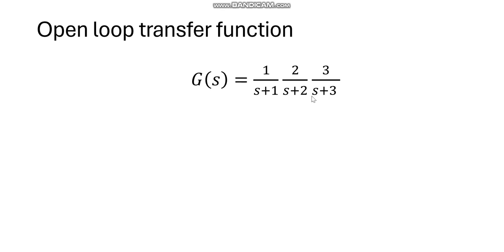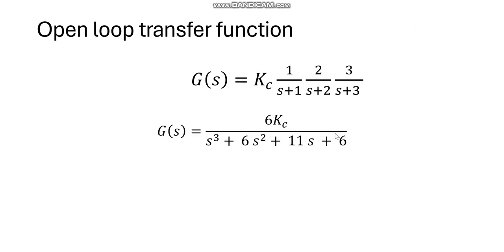I forgot to write Kc here, so I have just corrected it. This is the open-loop transfer function — a product of all the transfer functions. The overall transfer function is equal to 6·Kc over s³ + 6s² + 11s + 6.